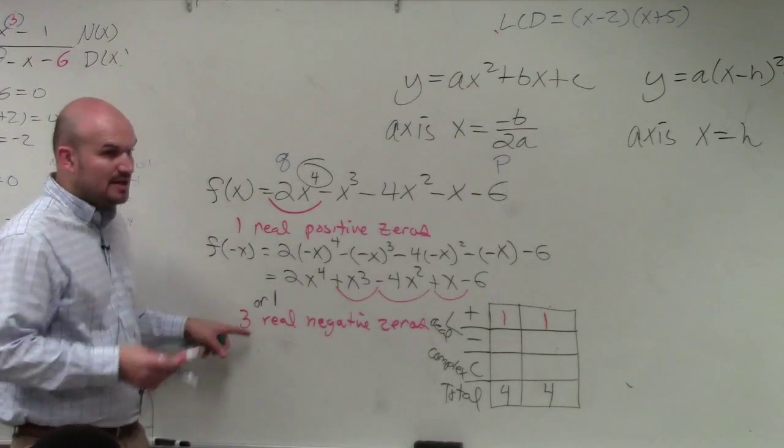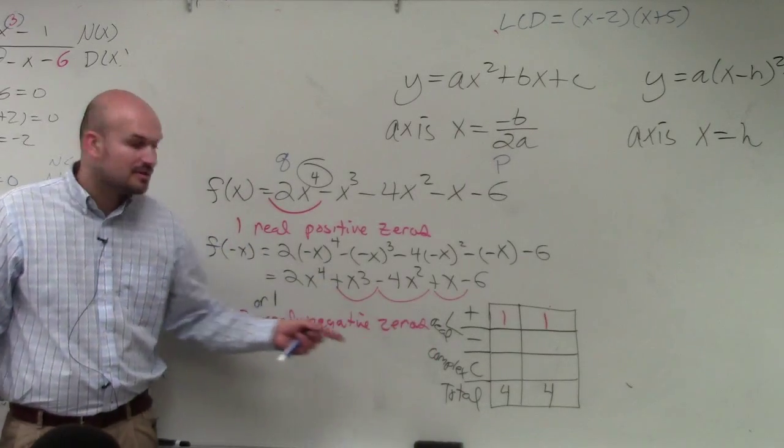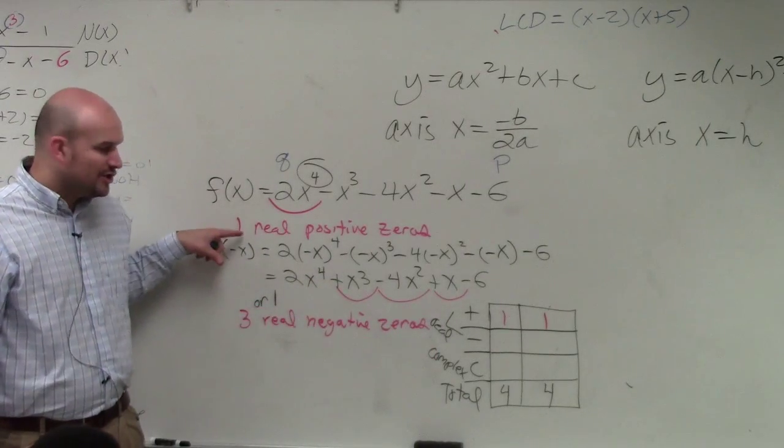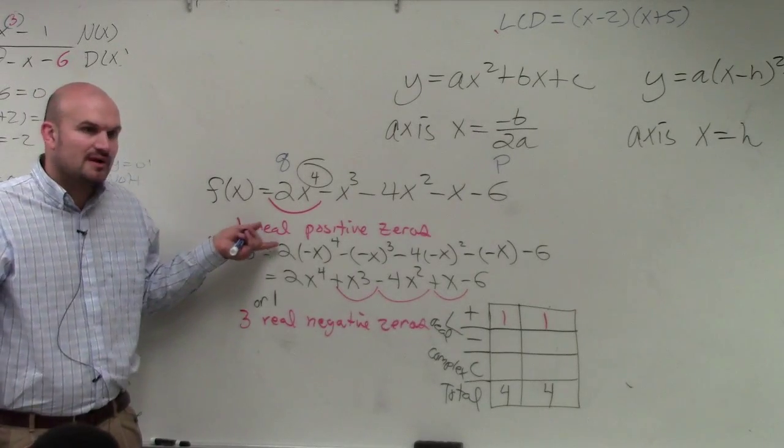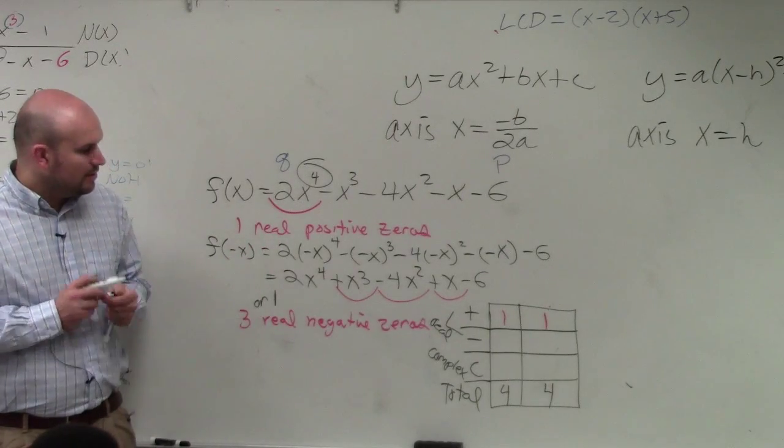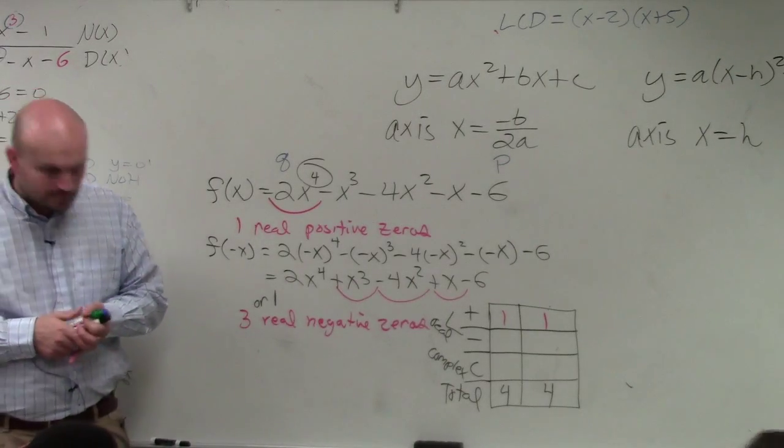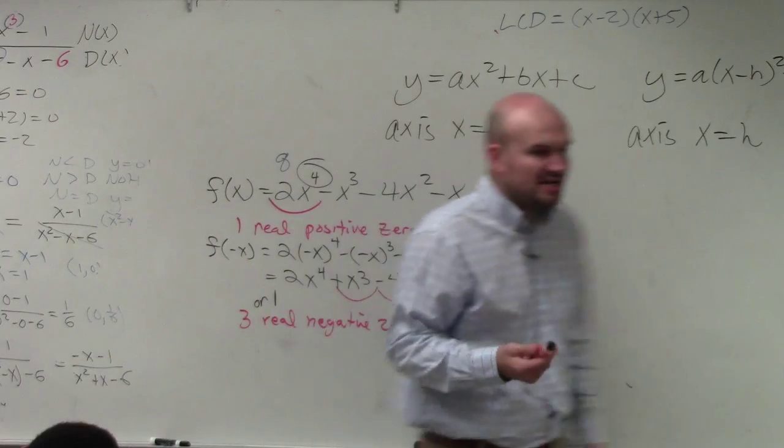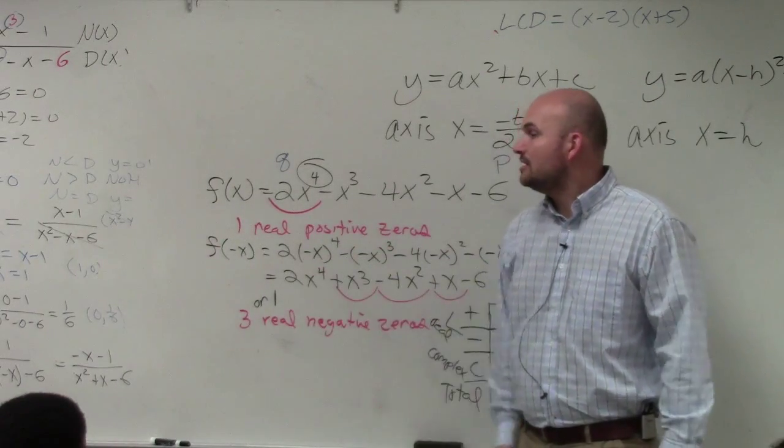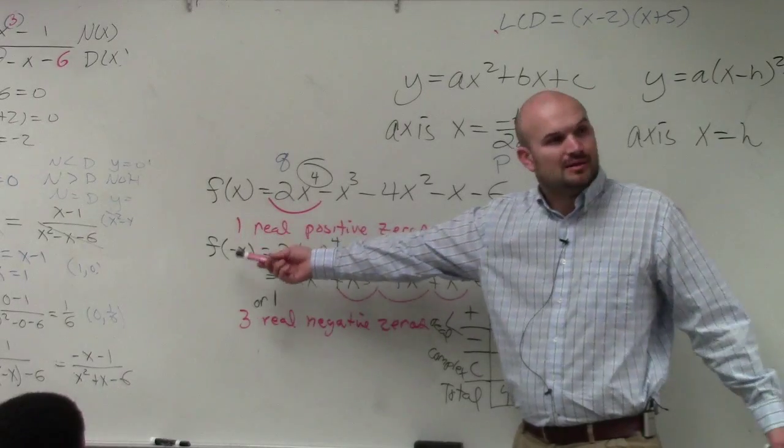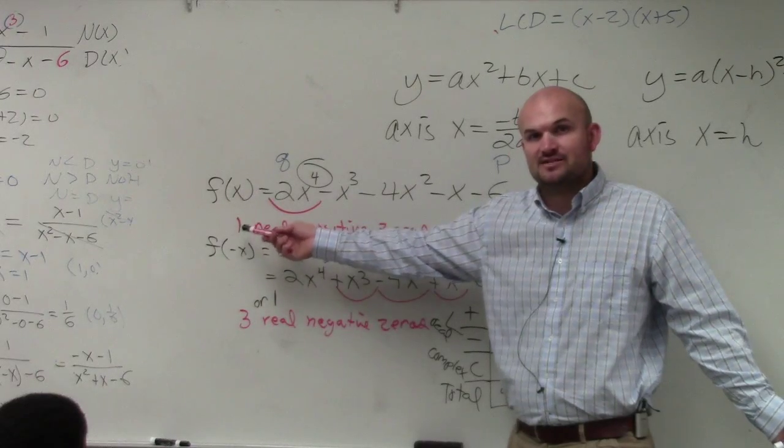You always take the number of sign changes minus an even number. For any of them. It doesn't matter. Here, you can't subtract two and still have a positive. You can't have negative one zeros, right? So you always subtract an even number. The number of sign changes, you always take the number of sign changes minus an even number. Here, the number of sign changes is one. But I cannot subtract an even number from one. So it just remains as one.